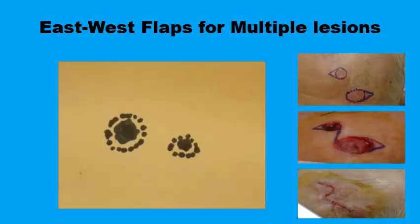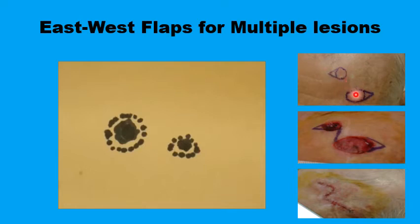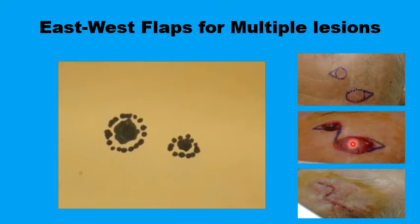Another good indication for the east-west flap is when you have multiple skin lesions in the same area. For example, with two small lesions on the forehead, you can draw two triangles to resect both lesions, but the triangles should point in different directions — like east and west. Once the triangular pieces of skin are excised, the final scar has three lines passing through or very close to relaxed skin tension lines.